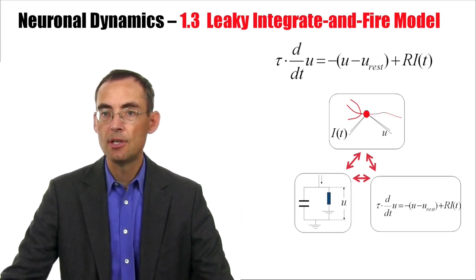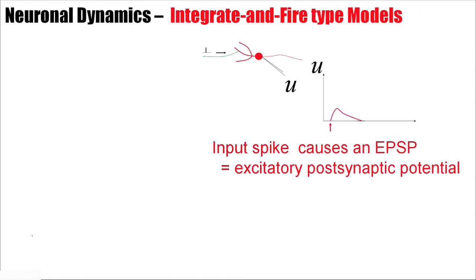We have seen a threshold already in a first simple model that I introduced at the beginning of this week, where I said each incoming pulse causes a response, causes a postsynaptic potential. If several pulses arrive one after the other, then these potentials are added, and at some point, if a threshold is reached, an output spike is generated.